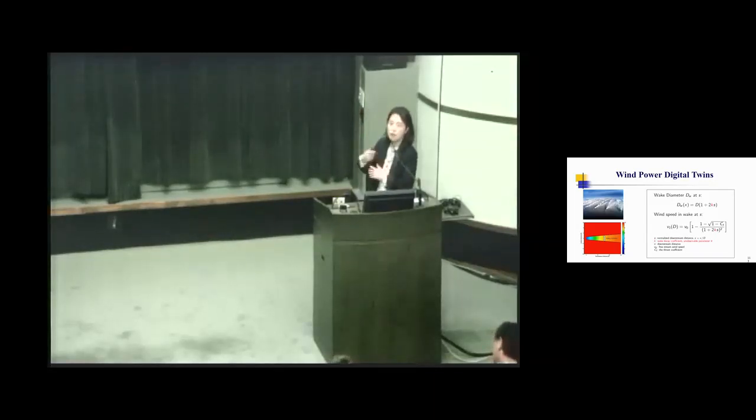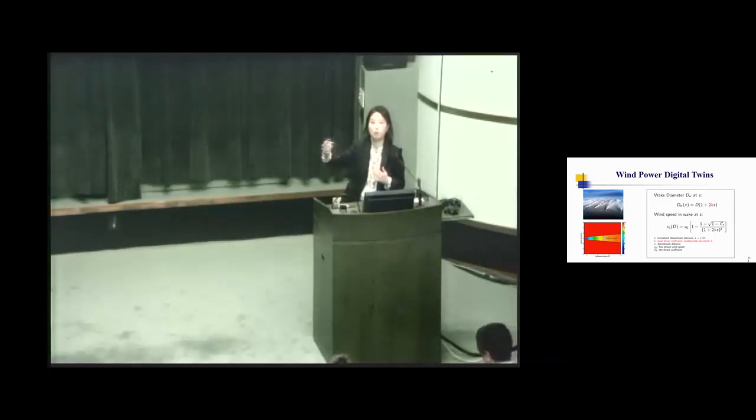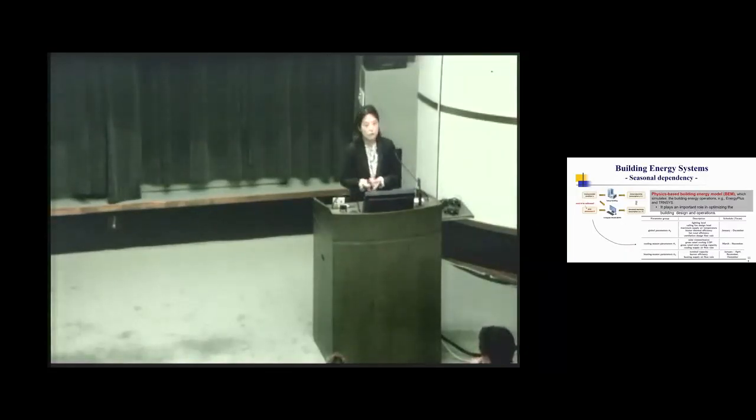Our goal is to make digital twin represent near-exact replica of actual system via parameter calibration. Here is one example. In the wind farm system, the turbine operation is not independent because of the wake effects. As you can see, the upstream turbines generate additional turbulence. The downstream turbines' performance really depends on upstream turbines' operational scheme. To characterize this kind of interaction between turbines, people make this digital twin model—wake effects model. In the wake effects model, there are some parameters that need to be specified. In the literature, they said you need to use 0.75 for land-based wind farms, 0.04 for offshore wind farms, but our data does not really say those are the optimal parameters.